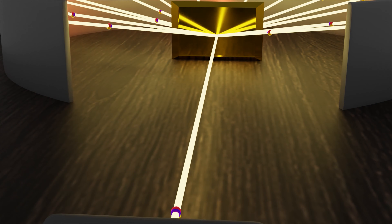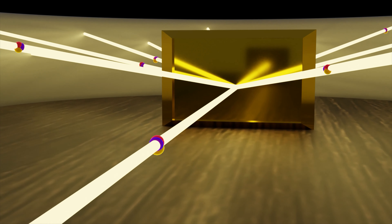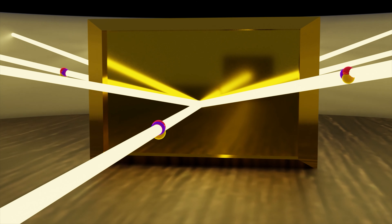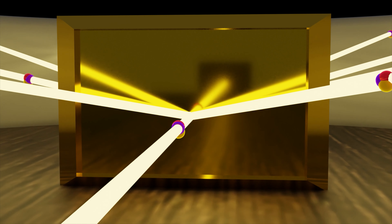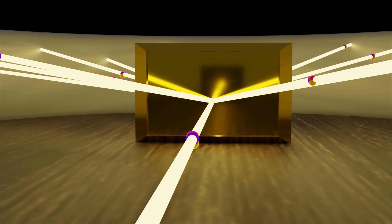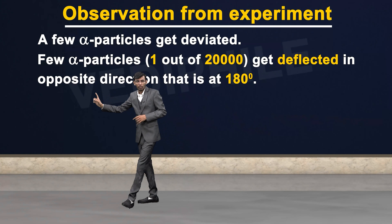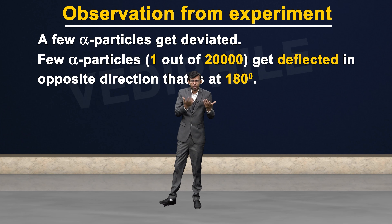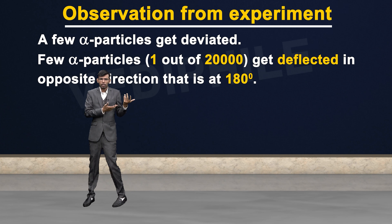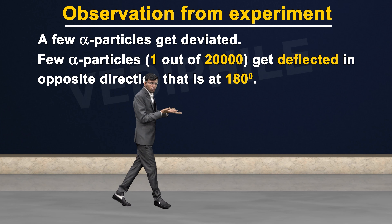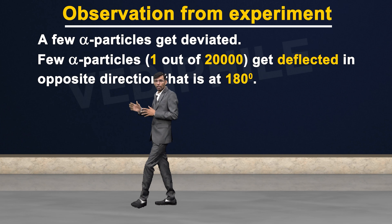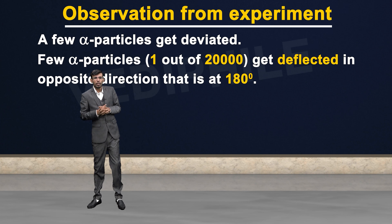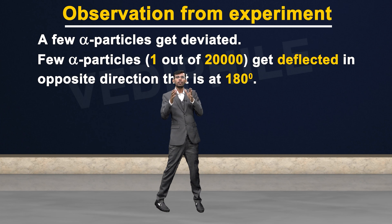The third observation was that very few alpha particles — one out of 20,000 alpha particles — got deflected in the opposite direction, that is at 180 degrees. So 1 in 20,000 alpha particles deflected at 180 degrees, going back in the opposite direction. According to Dalton's atomic model, alpha particles should have just passed through — at most they would slow down — but this one came back.